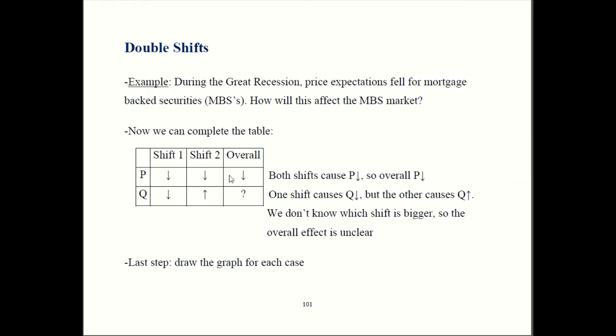With quantity, though, it's going to be ambiguous. Our first shift caused quantity to go down. Second shift caused quantity to go up. They're going in opposite directions. We don't know which effect is stronger.